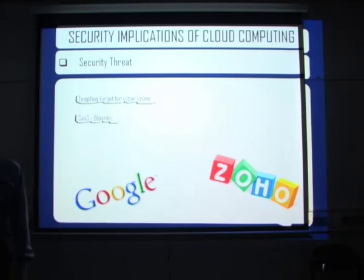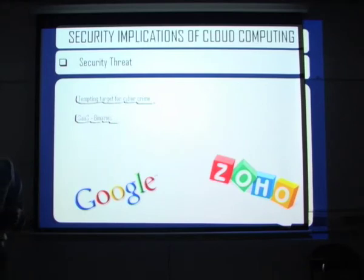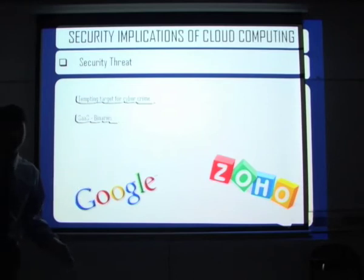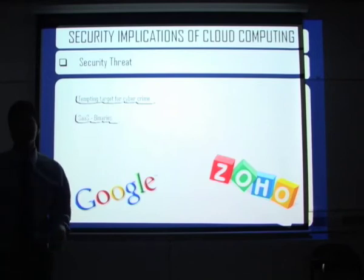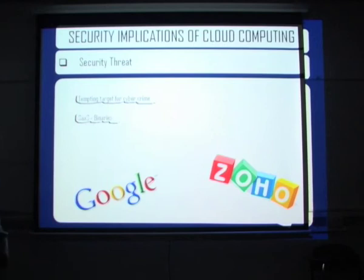You cannot even trust the leading service providers — no one is complete yet. For example, if you access Google, for initial authentication it will use HTTPS, a secure site. But after that, by default, it becomes HTTP unless you specifically set it to always be HTTPS. So there are security flaws. If it is HTTP and you are accessing your Gmail from a public network, someone sniffing the network can easily get hold of your account and your valuable information.